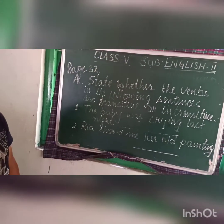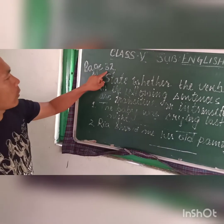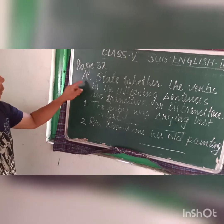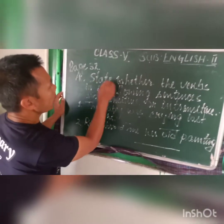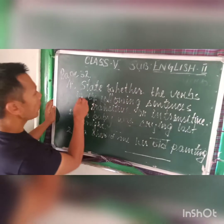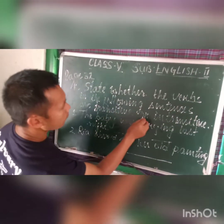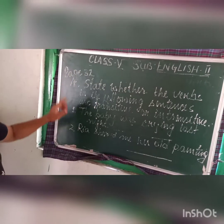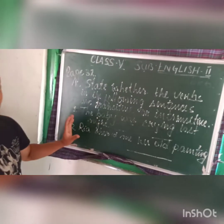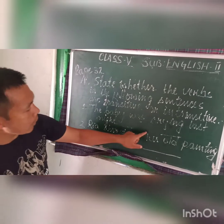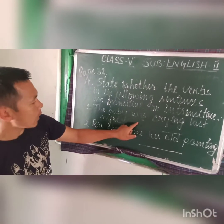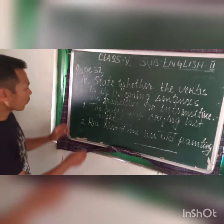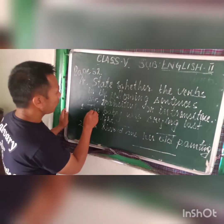In question number A on page number 32 of your textbook, you will find the exercise. The question is asking you to state whether the verbs in the following sentences are transitive or intransitive. If it is transitive, write transitive; if it is intransitive, write intransitive in the blank.